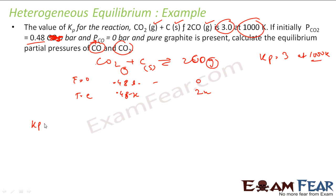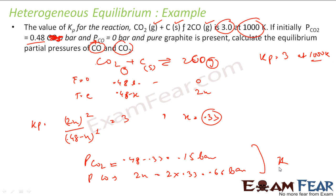So let us write the value of Kp. Kp will be partial pressure of CO to the power 2 divided by partial pressure of CO2 to the power 1. This carbon solid we can ignore. This value is given as 3. So you solve this equation, you get x is equal to 0.33. That means partial pressure of CO2 is 0.48 minus x, that is minus 0.33, that is nothing but 0.155. And partial pressure of CO is 2x, that is 2 into 0.33, that is 0.66 bar. And that is possible. Easy question.